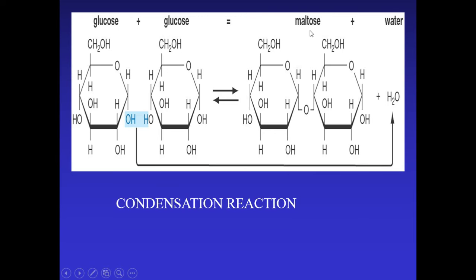Here is an example: the formation of maltose. Maltose is a disaccharide — it has two monomers joined together. It is made of two glucose units that have been chemically bonded. When the hydroxyl group on one glucose and the hydrogen on the adjacent glucose come together, water is removed and the chemical bond is made, producing the new molecule maltose.